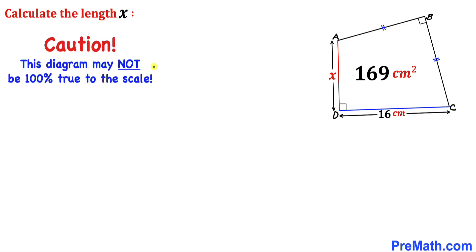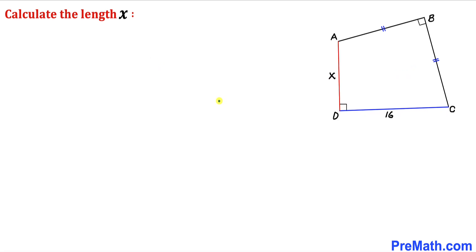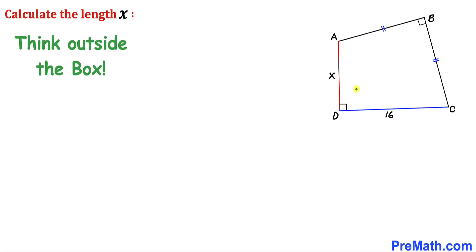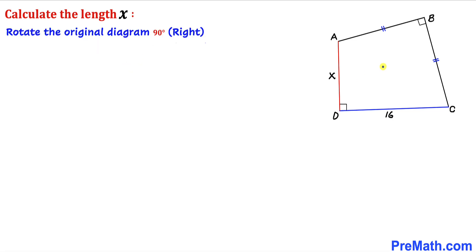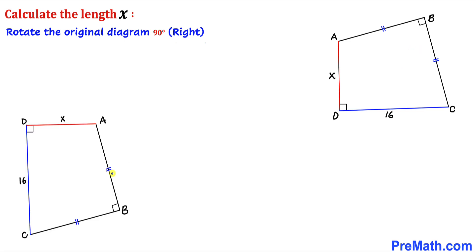Let me make it very clear that this figure may not be 100% true to scale. Let's get started with the solution. Since we are dealing with this tricky problem, we are going to think outside the box. Therefore, let's go ahead and rotate this diagram 90 degrees to the right, as you can see in this diagram.